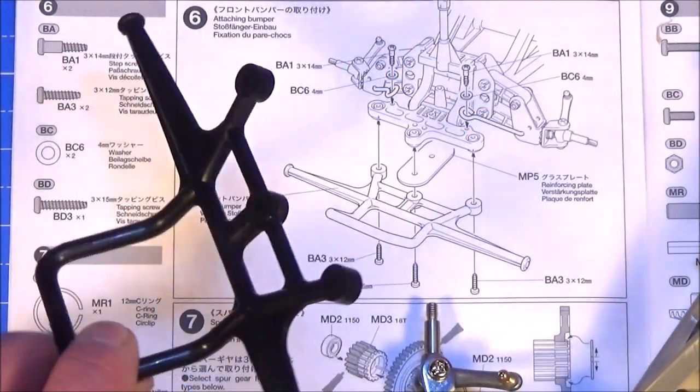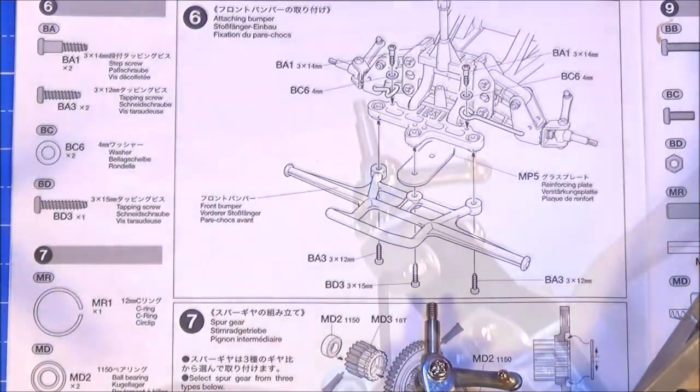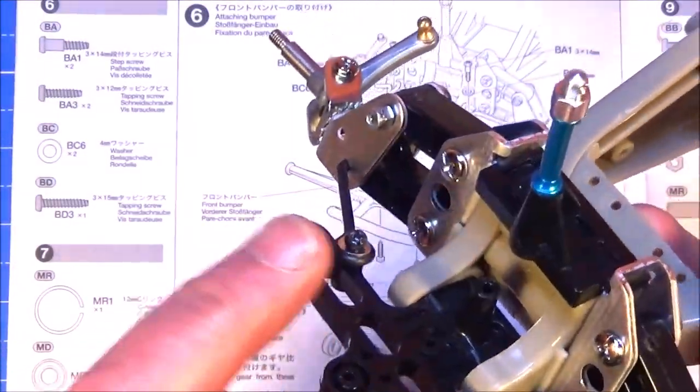In step 6 we're going to fit the front bumper which just comes loose in the box. But first you need to attach the two radius arms. There's the one done.